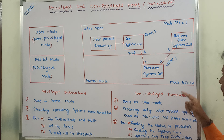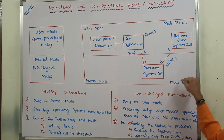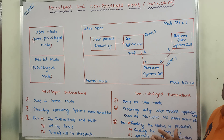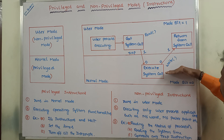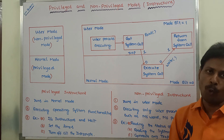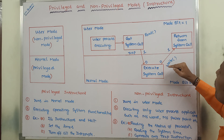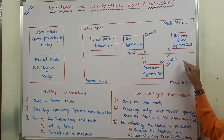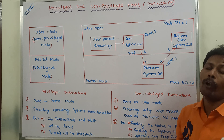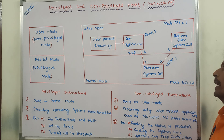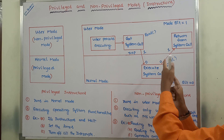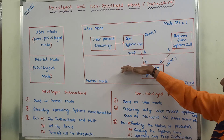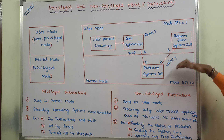After performing the write system call, the system returns from kernel mode to user mode. That means the mode bit value is changed from 0 to 1 after the write system call is executed. In this way, the system can be changed from user mode to kernel mode and kernel mode to user mode.